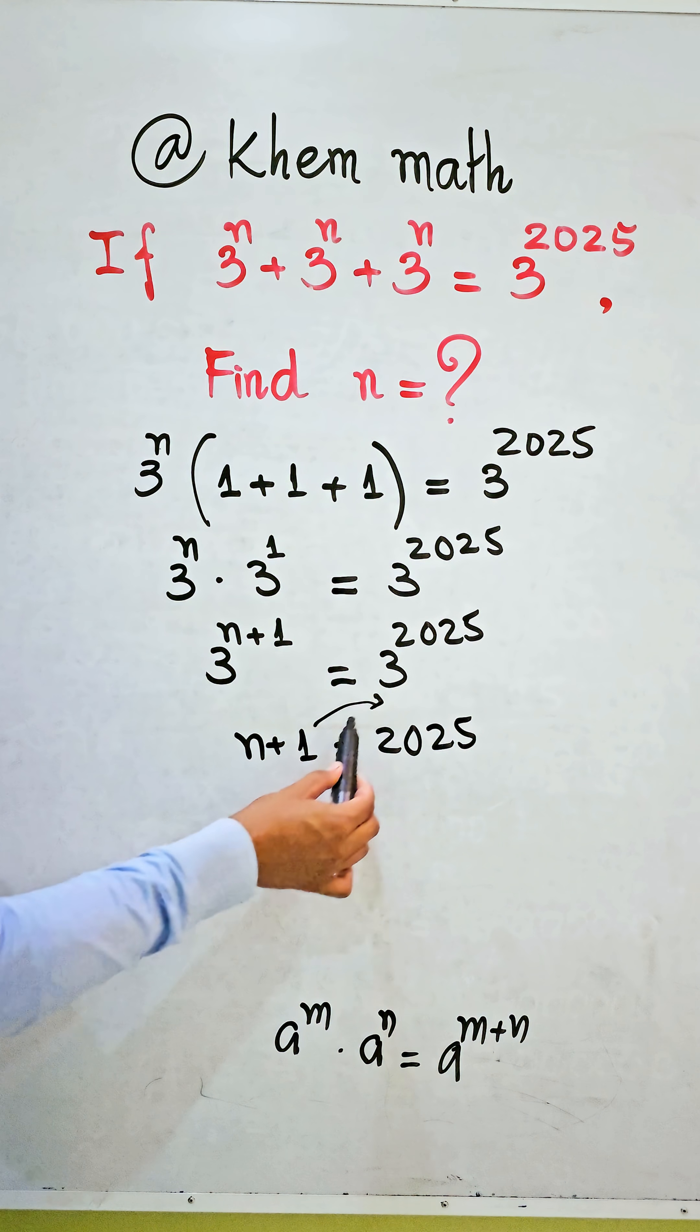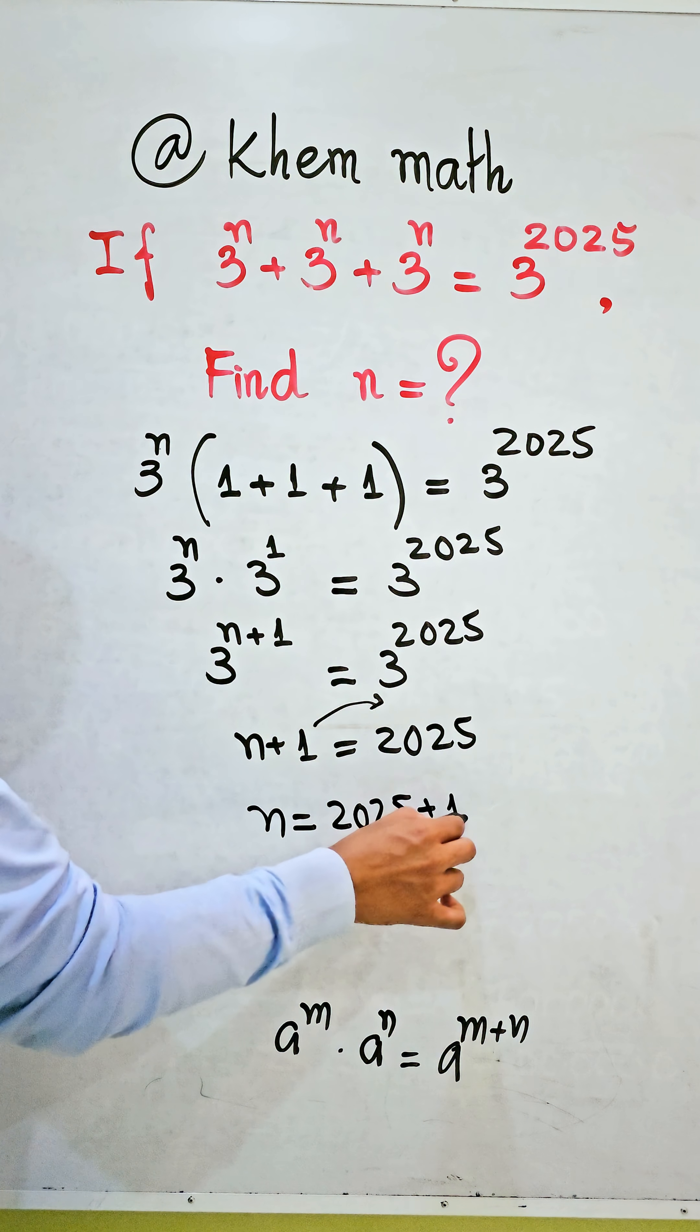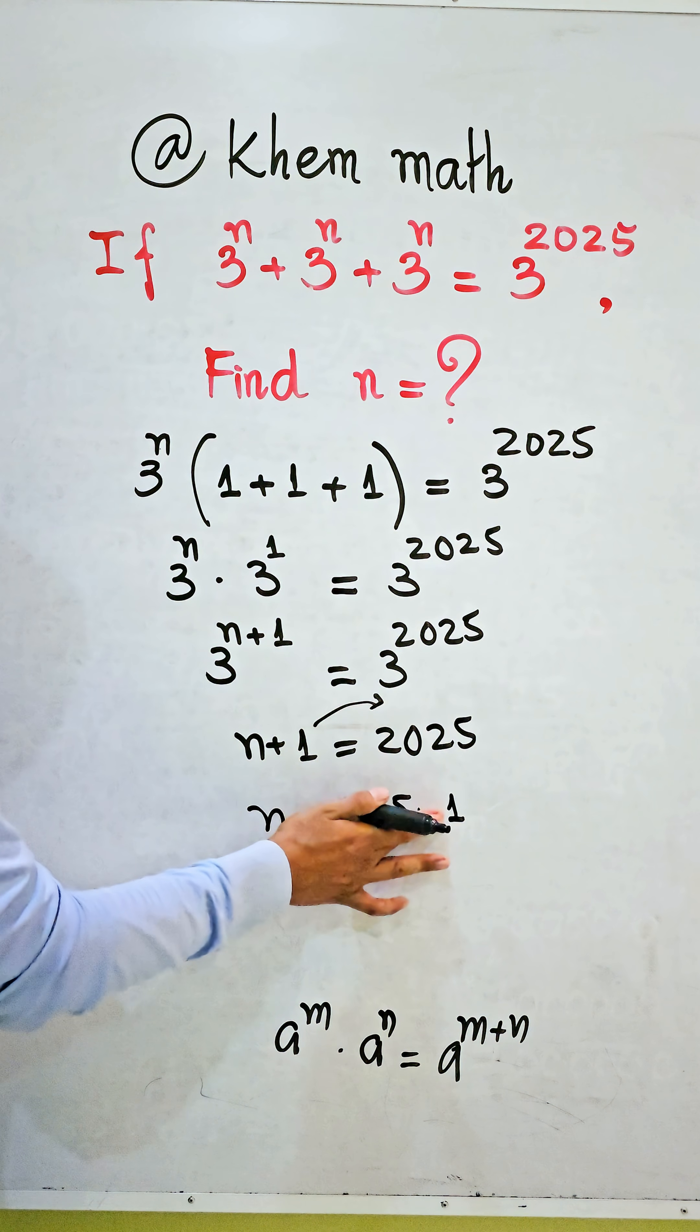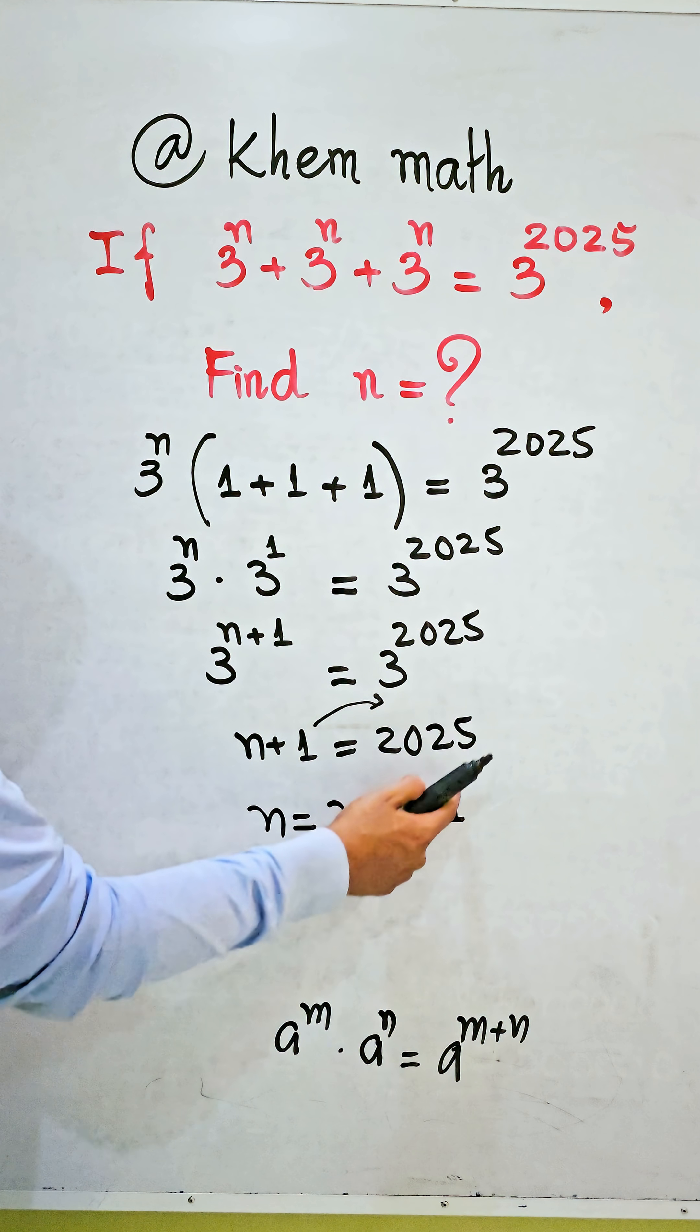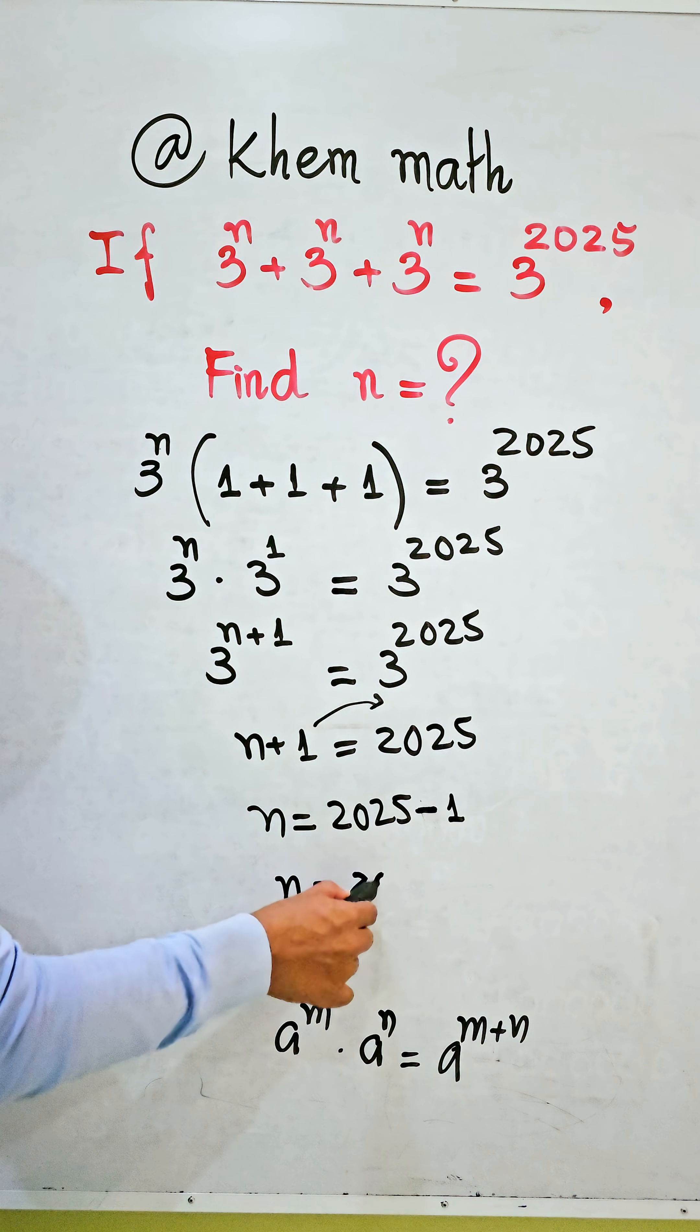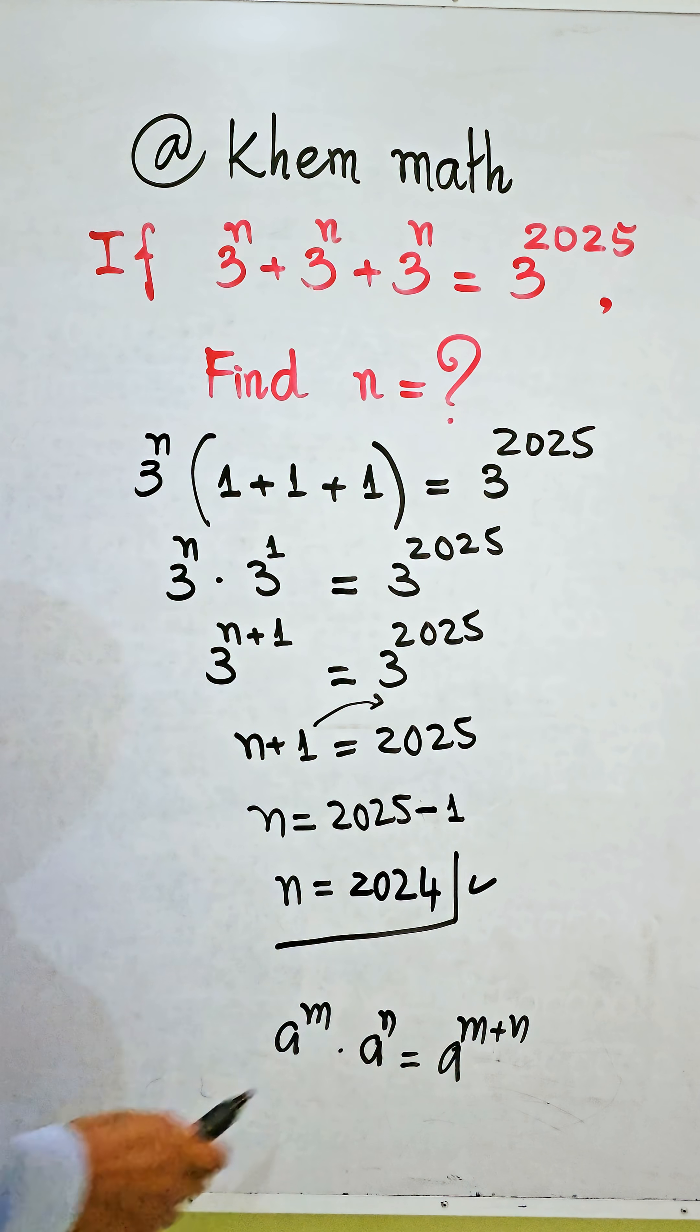We get n equals 2025 minus 1. Here, plus changed to minus when we move it. So we get n equals 2024, which is our answer.